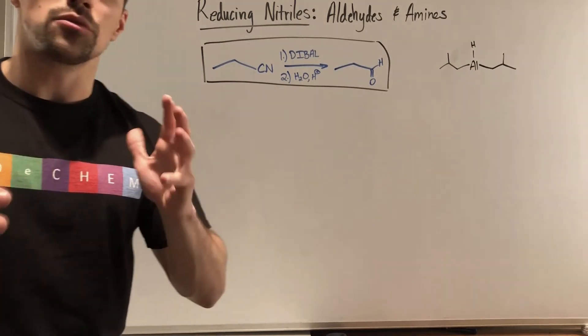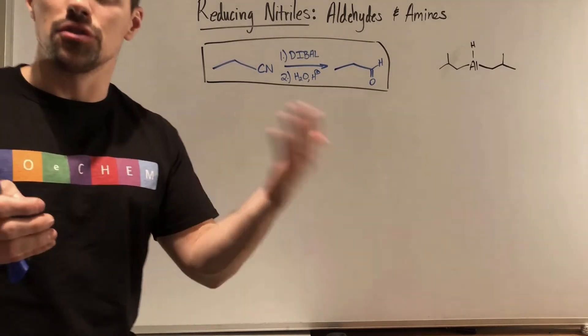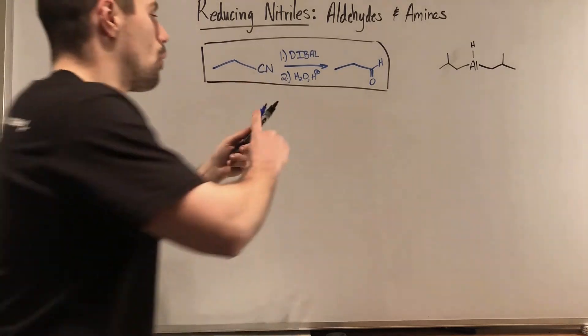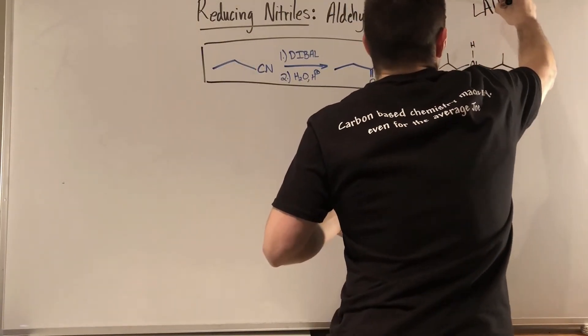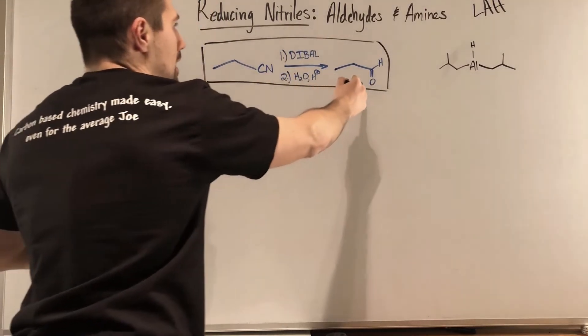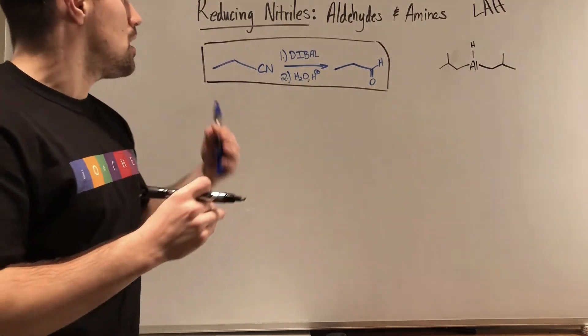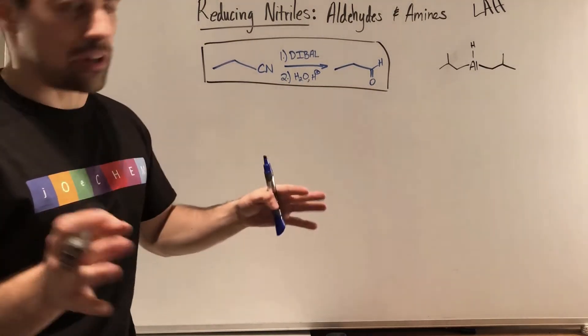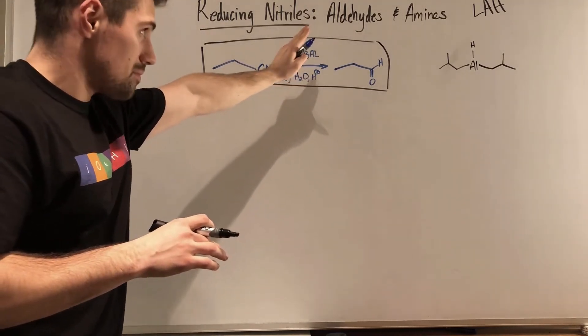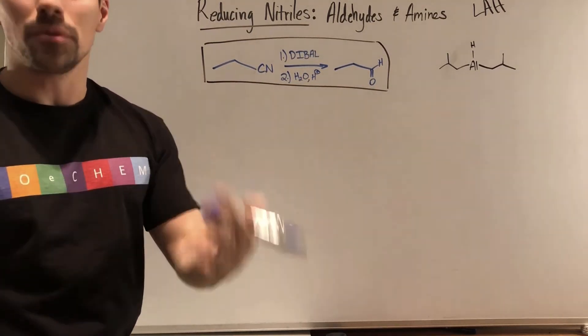So when you're reducing nitrile, you can use a less aggressive reducing agent such as DIBAL. You can use DIBAL or you can use our favorite friend lithium aluminum hydride. First I want to talk about what happens when you use DIBAL and how you get aldehydes. So before we even get started, DIBAL - di-isobutyl aluminum hydride. That's what it stands for. It's a mouthful which is why people abbreviate it.